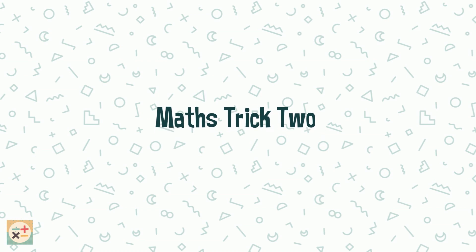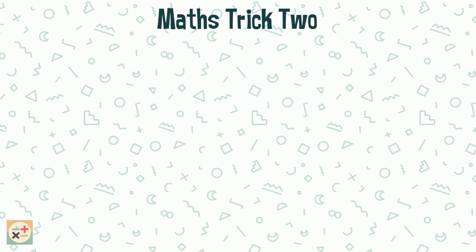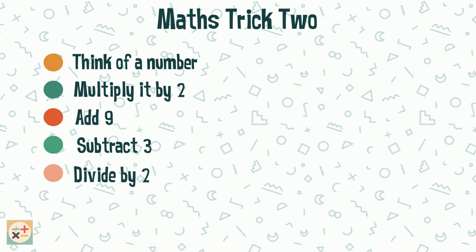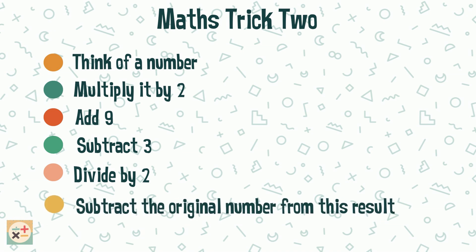Maths Trick 2. Think of a number. Multiply it by 2. Add 9. Then subtract 3. Divide this result by 2. Now subtract the original number from this result. The answer will always be 3. Here's an example using this trick.